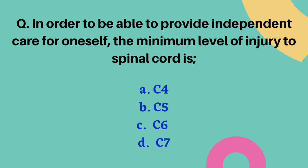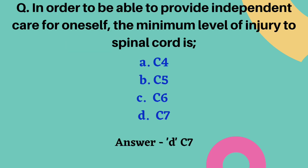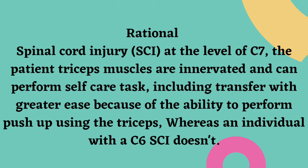In order to provide independent self-care, the minimum level of spinal cord injury is which? Options are C4, C5, C6, or C7. The correct answer is C7. At C7, the triceps muscles are innervated and the patient can perform self-care tasks including transfers with greater ease due to the ability to perform push-ups using the triceps. An individual with C6 spinal cord injury cannot perform daily activities independently.